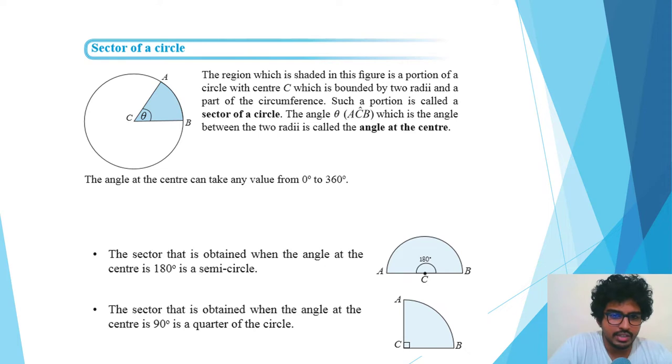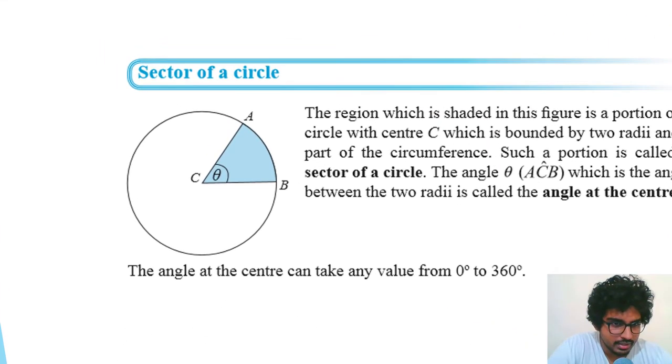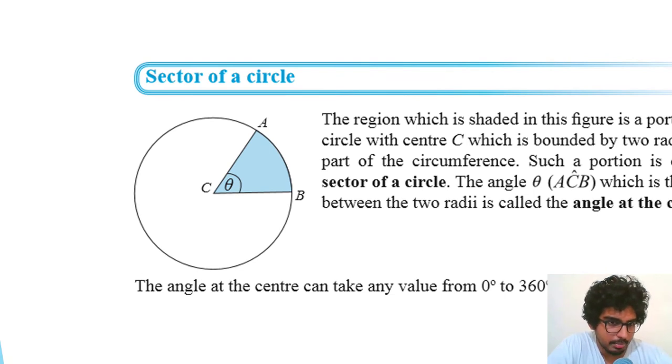Now we can see what's sector of a circle. The region which is shaded in this figure is a portion of a circle with center C which is bounded by two radii and a part of the circumference. You can see there's a circle and then there's a light blue colored pie, looks like a piece of a pizza. A piece like this we actually call a sector.